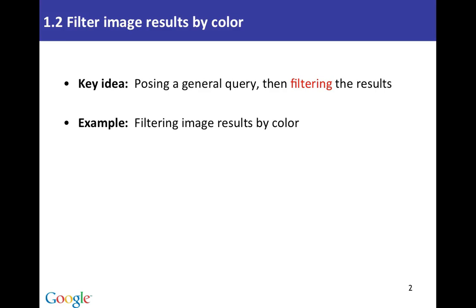This is lesson 1.2 and we're going to learn how to filter results. The general idea is that you've got the ability to ask for many kinds of results by doing a simple Google query. Do a query, get a million results. The challenge is really how do you filter that down to the stuff you care about? This lesson is about how to filter down by looking for particular colors in the image. We'll start with color but I'll show you some other things as well.